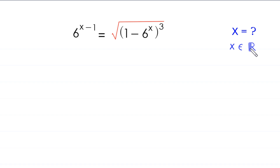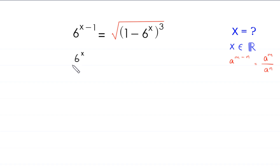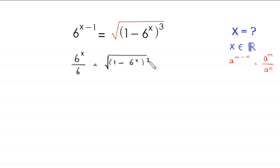We start by using the property of exponents: a to the power (m minus n) is equal to a to the power m divided by a to the power n. This gives us 6 to the power x divided by 6, equal to the square root of (1 minus 6 to the power x) whole cubed. From here, we square both sides.